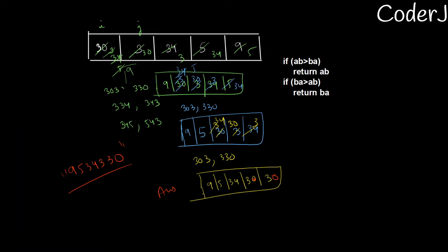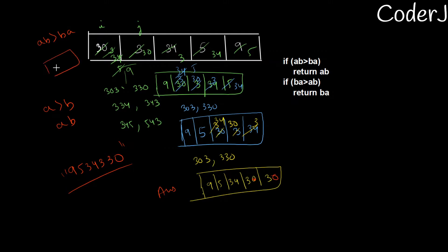What have we done differently here? We are sorting in descending order, but the meaning of 'descending' has changed. We are no longer simply saying if a > b then put a before b. Instead, if AB > BA then put a before b. This is the only thing that has changed — we've learned how to create a custom comparator, and using this we work with our sorting.